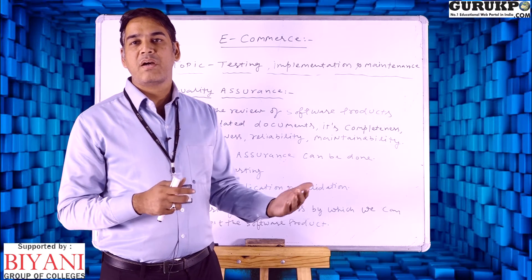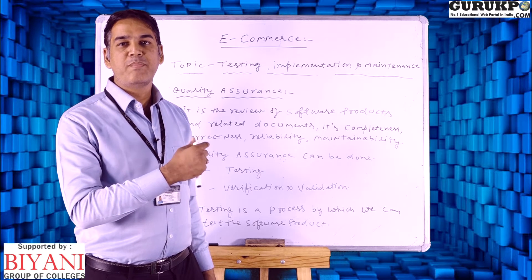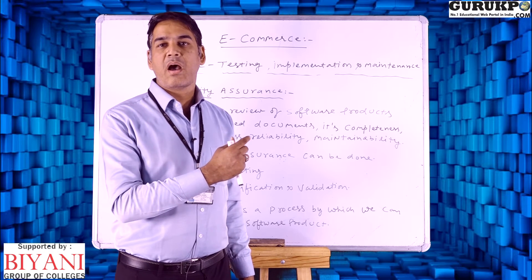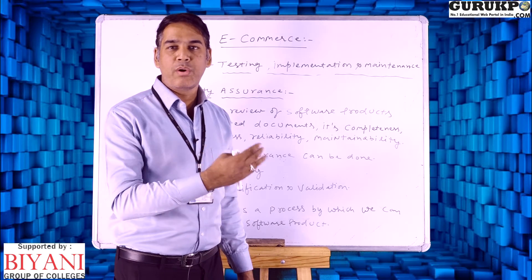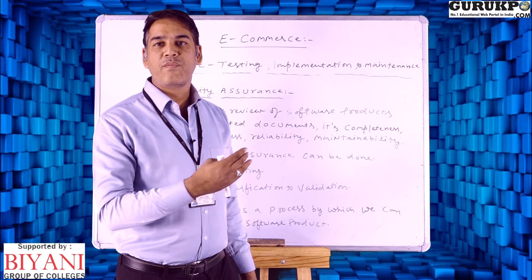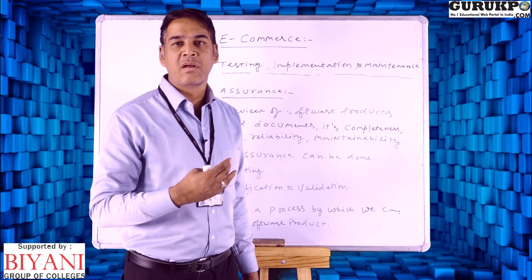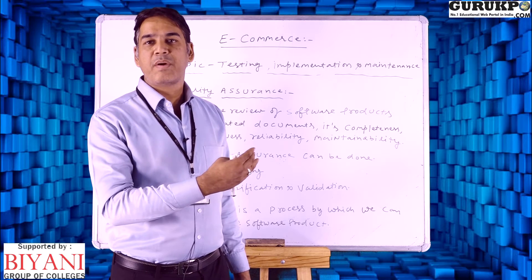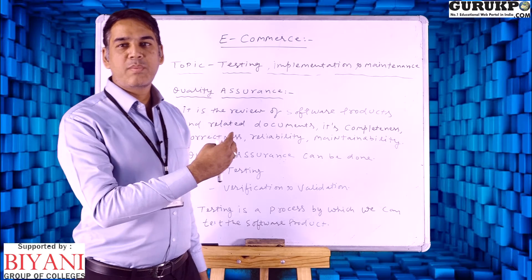After that, we have another part which is called the coding part. After completing the designing, we implement the coding part. The coding part basically defines the functionality — how we implement the product, how the code works using the functionality provided to buttons, controls, and so on. The next part is called the testing part.